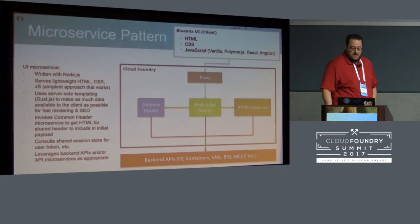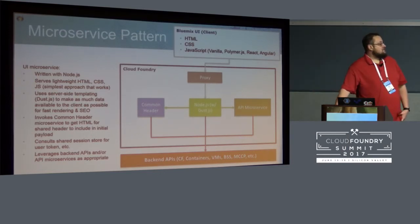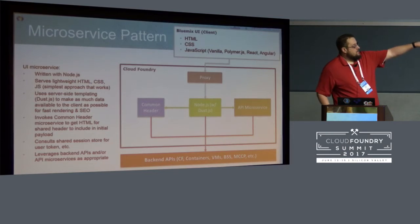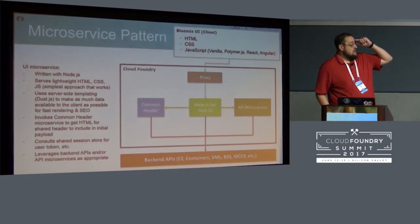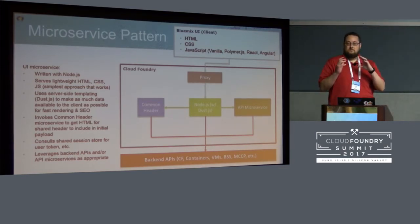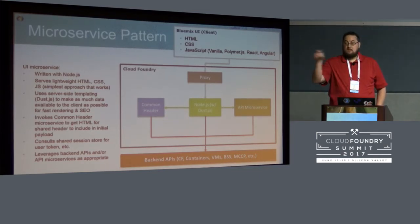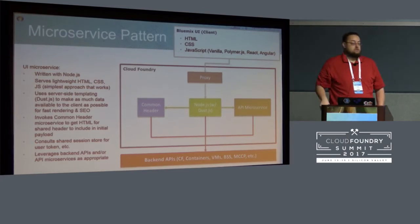One thing I always kind of gloss over is the proxy. There at the top in the Cloud Foundry box, the proxy is really what holds the whole thing together. Now instead of having a route — say console.bluemix.net — that just goes to a Java app, we now have that route go into the proxy, and based on the path of the URL, it routes to the right microservice.